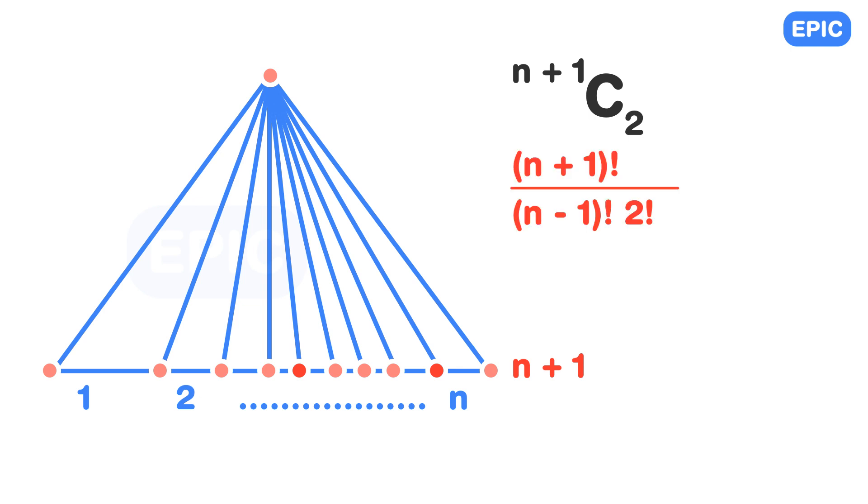This equals n plus 1 factorial divided by n minus 1 factorial and 2 factorial. This comes to n into n plus 1 divided by 2. Can you think of a reason why sum of first n natural numbers is equal to n plus 1 C2?